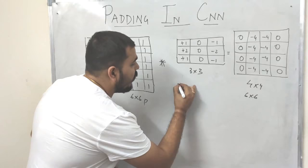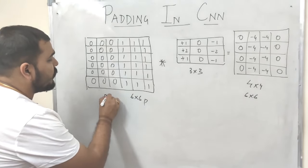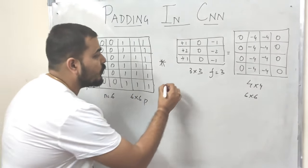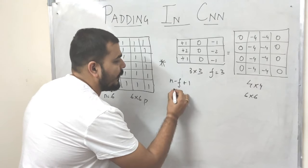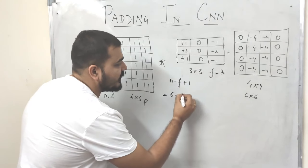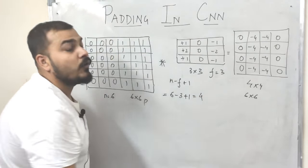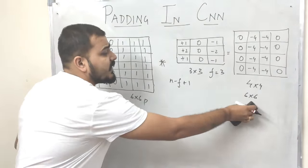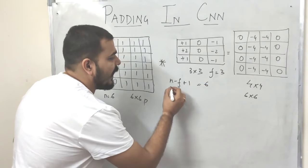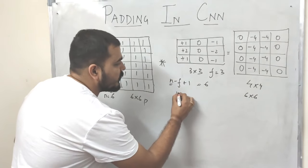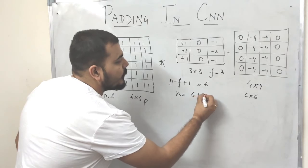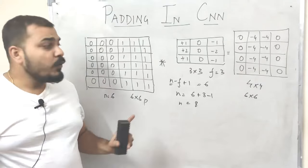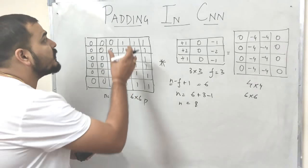If you remember the formula for calculating the output dimension: n minus f plus one. My n value is six, filter size is three, so six minus three plus one gives four — that is the output dimension. Now if I want an output dimension of six from a six cross six image, I need to calculate what n should be. Working backwards, n would need to be eight. But we only have a six cross six pixel image, so how can we make it eight cross eight? For that, we use padding.